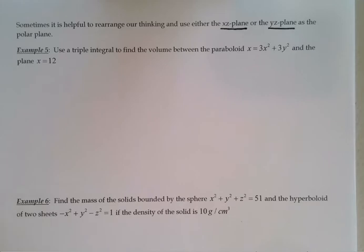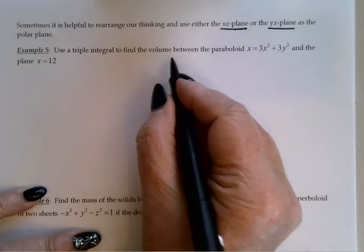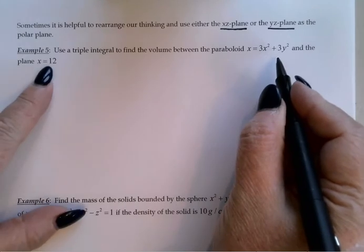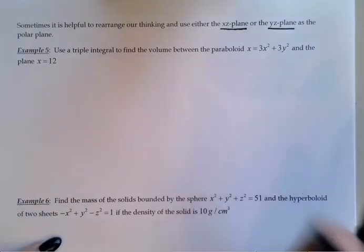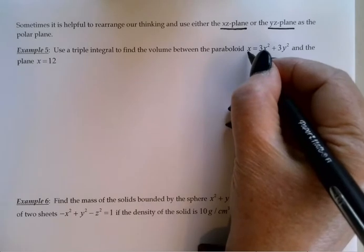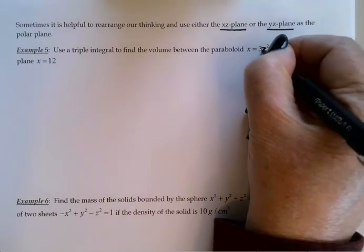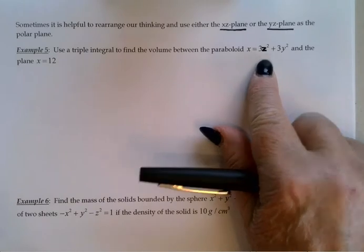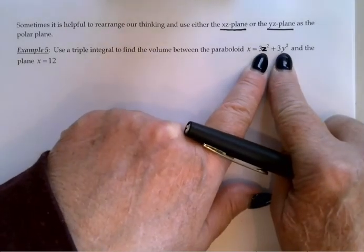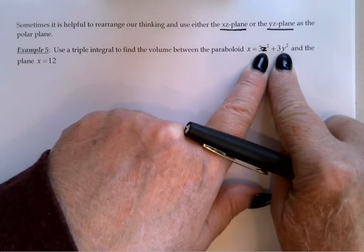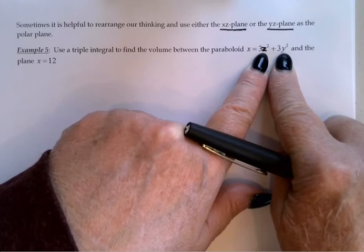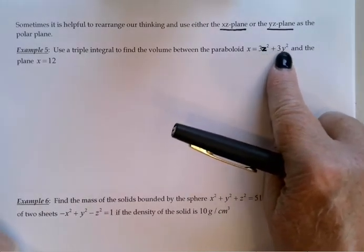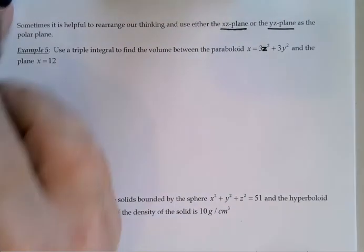In example 5, we'd like to use a triple integral to find the volume between this paraboloid and the plane x equals 12. Now there is a typo here. If you would fix this for me, it should say x is equal to 3z-squared plus 3y-squared. And as I look at that, I'm thinking, well gosh, if y-squared plus z-squared were equal to r-squared, then that right-hand side would just be 3r-squared, which would be really nice. And so why not? Let's let the y-z plane be the polar plane this time.